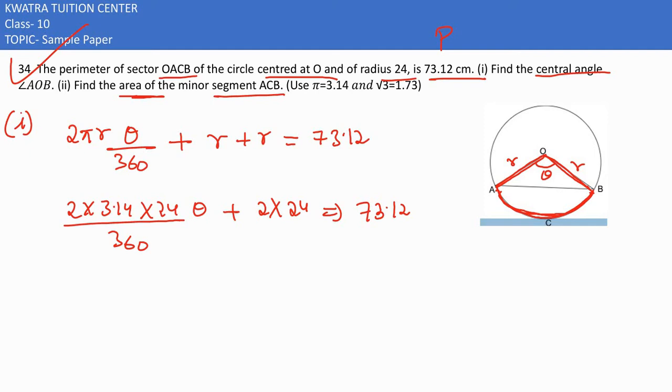Now let's simplify this. If you need to reduce it, you can do 2 times 24 times 3.14 over 360 theta plus 1. We can solve this further. 2 into 24 is 48.